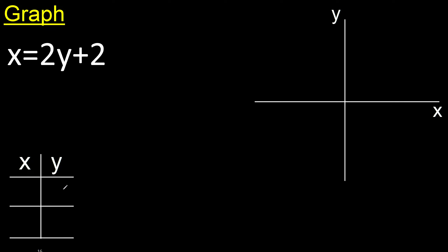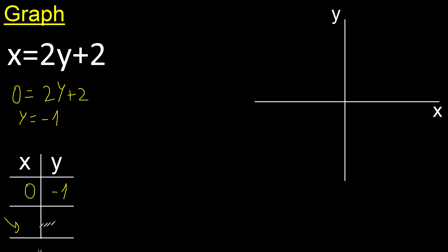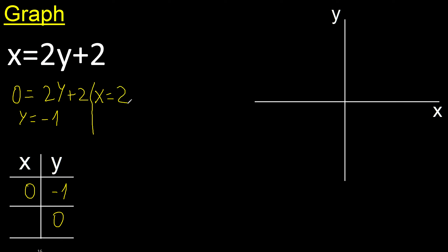Here any number or here any number. For example, x is 0. Here x is 0. Find y — y is minus 1. Here any number or here any number. For example, y is 0. x equals 2 multiplied by 0, which is 0; 0 plus 2 is 2. y is minus 1.